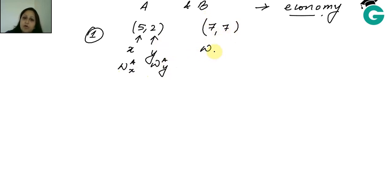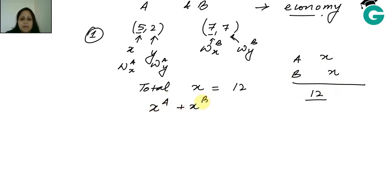The endowment of person A for good x is 5, for good y is 2. The endowment of good x for person B is 7, good y is also 7. The total units available in the economy is 5 plus 7, which is 12. Which means that both of the consumption cannot be more than 12.